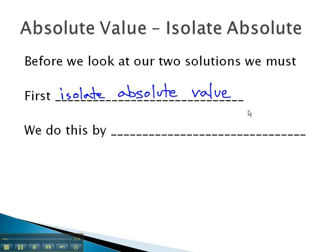Only after isolating the absolute value can we consider both the positive and negative solutions. We do this isolation by solving the equation for the absolute value like a formula. Let's look at some examples where we see this work out.